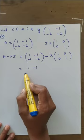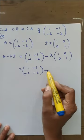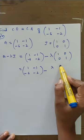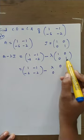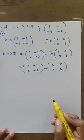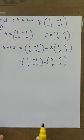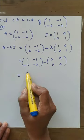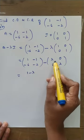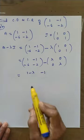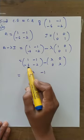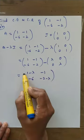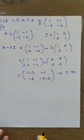A is [1, -1; -6, -2] minus lambda times I. Lambda times I gives [lambda, 0; 0, lambda]. Subtracting row by row: first row gives 1 minus lambda and minus 1 minus 0 equals minus 1; second row gives minus 6 minus 0 equals minus 6, and minus 2 minus lambda. This is the characteristic matrix.